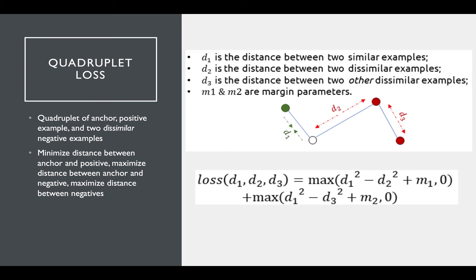Having already learned the intuition for triplet loss, it's easy to see how quadruplet loss seeks to bring the positive close to the anchor, while simultaneously spacing the anchor from the first negative and the two negatives from each other.